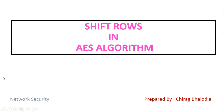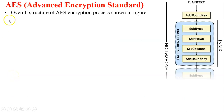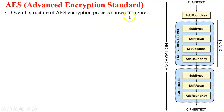Hello friends, myself Chirag. In this video I am going to discuss Shift Rows in AES algorithm, a topic of network security. The overall structure of AES encryption process is shown in the figure, where plain text and Add Round Key are the input of the different encryption rounds. After completion of all encryption rounds it generates ciphertext. In AES, the size of the key and plain text must be the same, and the generated ciphertext size must also be the same.